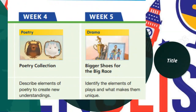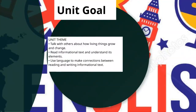In week four, we will learn about a new genre — poetry — and describe the elements of poetry. In week five, we will learn about the genre drama, read Bigger Shoes for the Big Race, and identify the elements of the play. The unit goal is: we will talk with each other about how living things grow and change, read informational text and understand its elements, and use language to make connections between reading and writing.